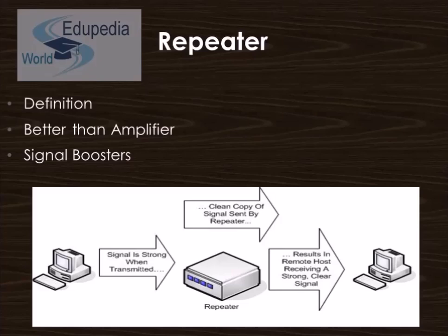That is why they are also known as signal boosters, although they cannot do the intelligent routing performed by bridges and routers. As you can see from the figure, the signal is strong when transmitted but at a certain point the signal becomes weak. At that point a repeater is installed which regenerates or re-strengthens the signal so that a clear signal is sent to the remote host receiver.